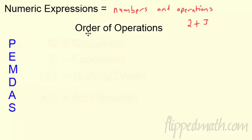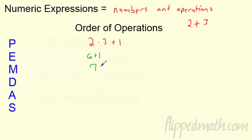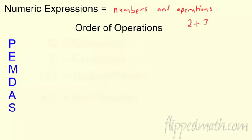When you think numeric expressions, you think order of operations. Why do we have order of operations? So we all get the same answer. Let's say we had an expression like 2 times 3 plus 1. Some people could say 2 times 3 is 6, plus 1 and get 7. But someone else might say 3 plus 1 is 4, then times 2 and get 8. Two different answers — we can't have that. We all need to get the same answer.